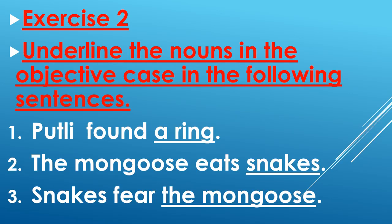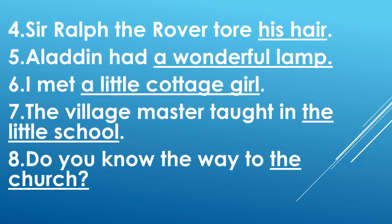Third sentence: snakes fear the mongoose. The mongoose is in objective case because it is the object in the sentence — underline the mongoose. Fourth sentence: Sir Ralph the Rover tore his hair. His hair is the object in the sentence, so it is in objective case — underline his hair. Fifth sentence: Aladdin had a wonderful lamp. A wonderful lamp is the object, so it is in objective case — underline a wonderful lamp.